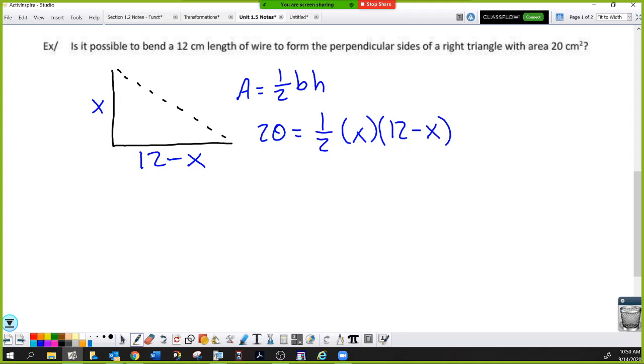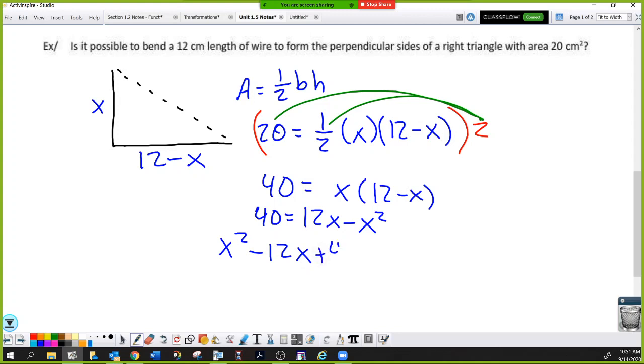What you know is that the area of a triangle is one half base times height. You know your area, it's 20. So 20 equals one half base and height. Do we like fractions? No, most people don't. I'm just going to multiply everything by 2 so I can get rid of the fraction. It doesn't distribute across multiplication. So what we have here is 40 equals X times 12 minus X.